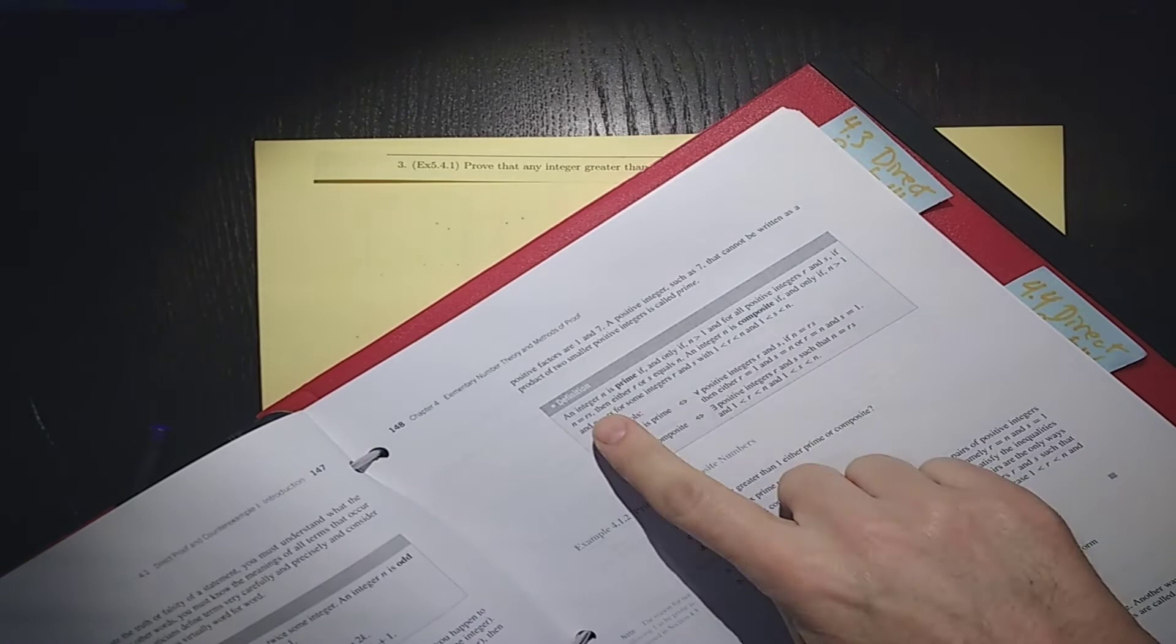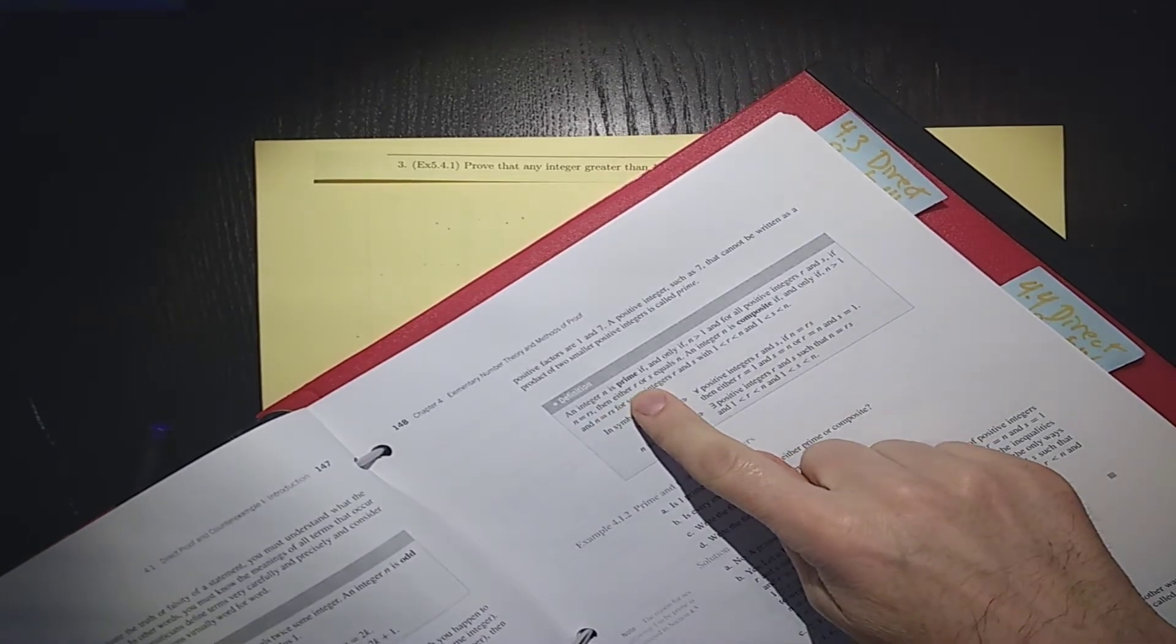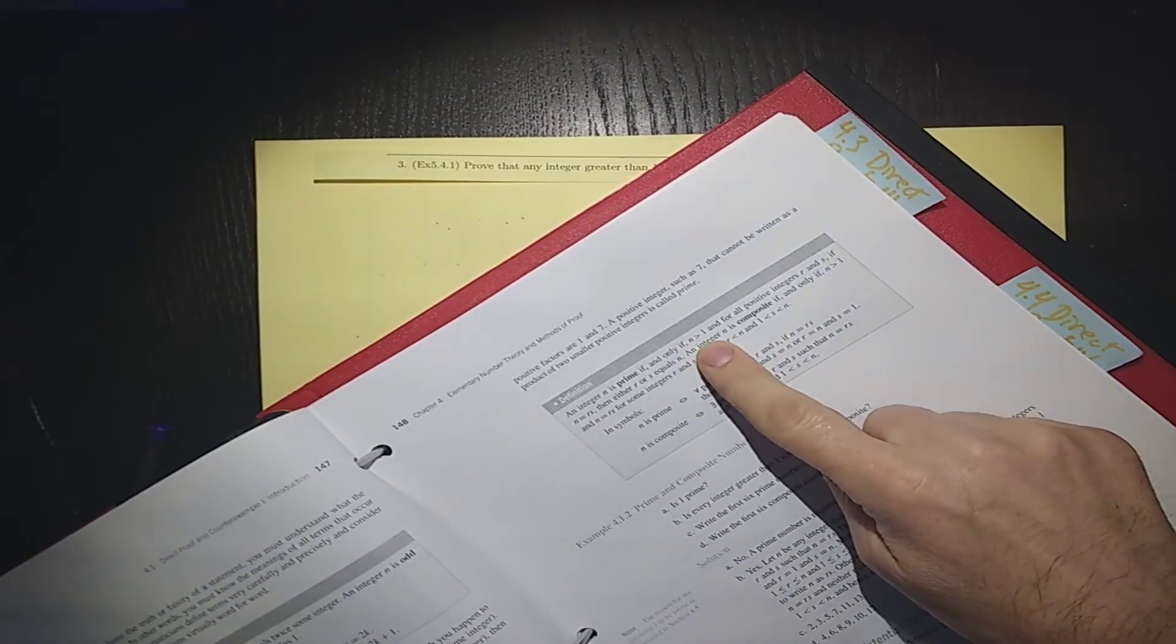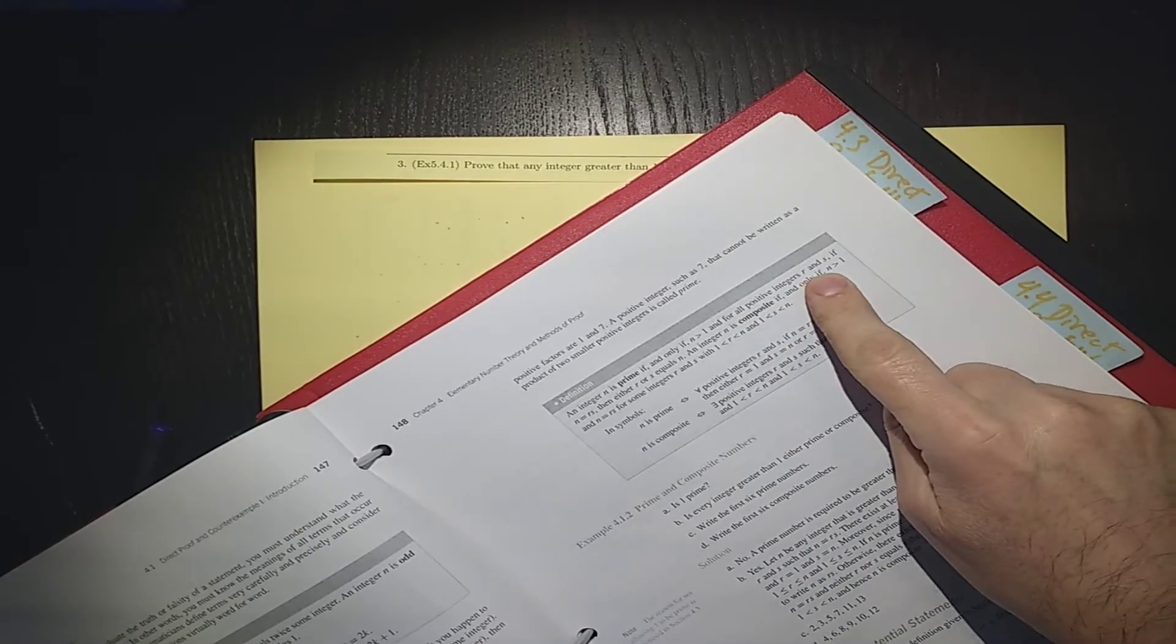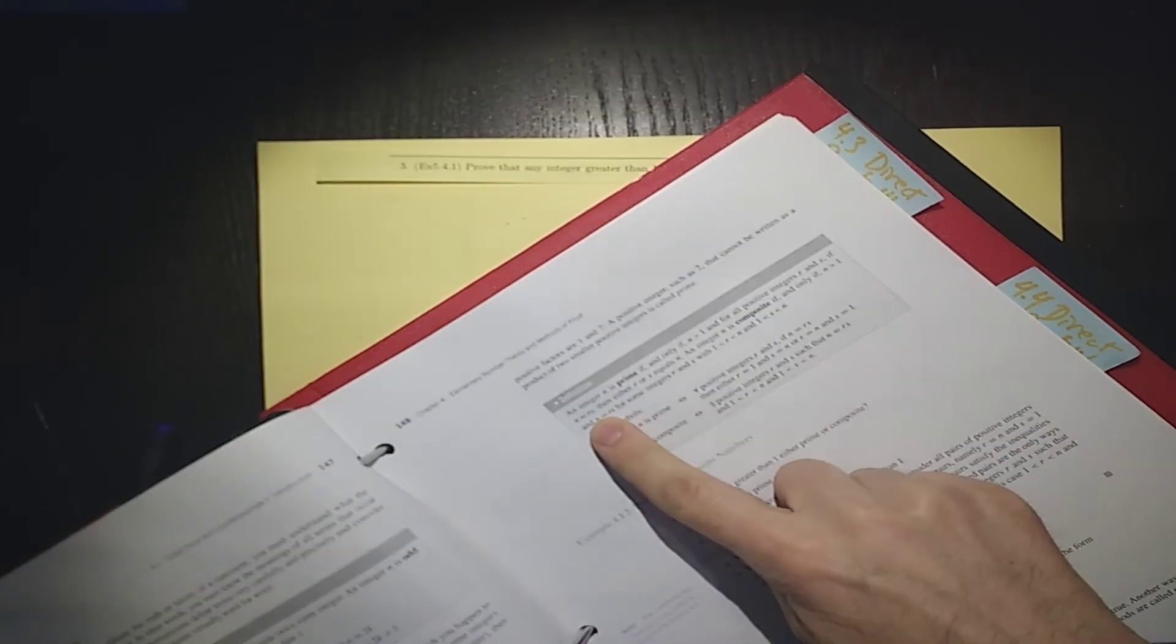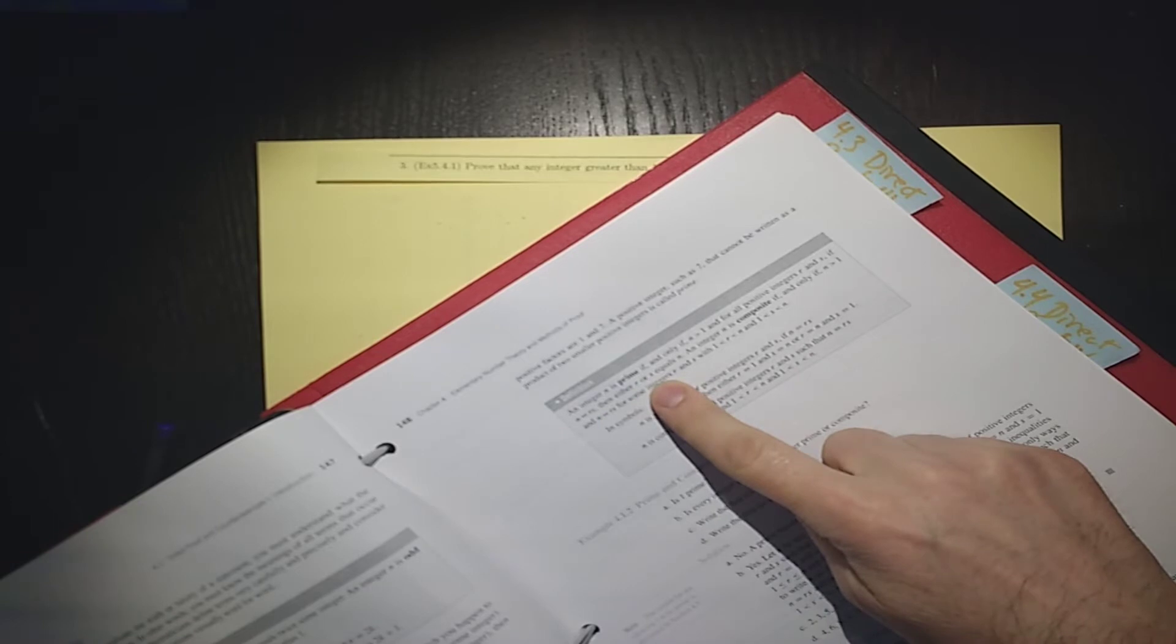And for this, we need to know what a prime number is. So you should go back to your textbook and read that an integer n is prime if and only if it's bigger than 1, and for all positive integers r and s, if n is the product of r times s, then either r or s equals n.